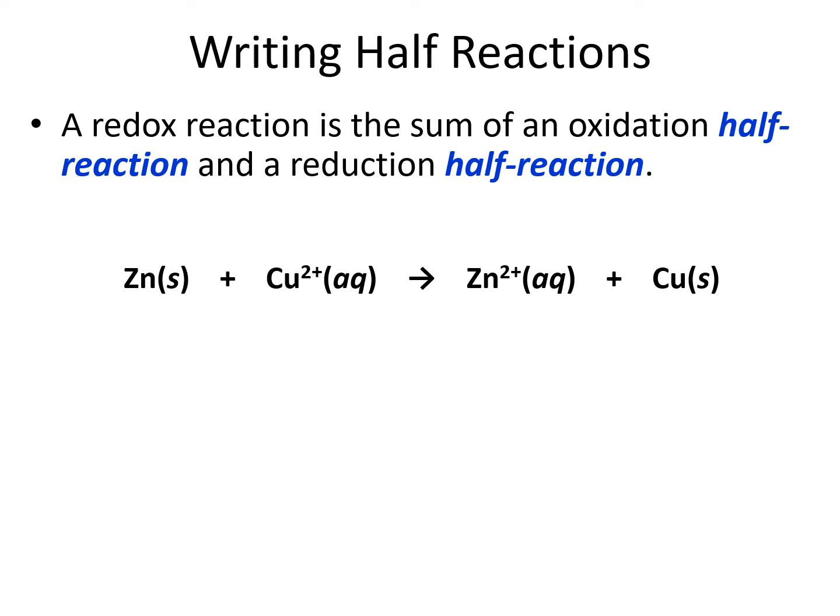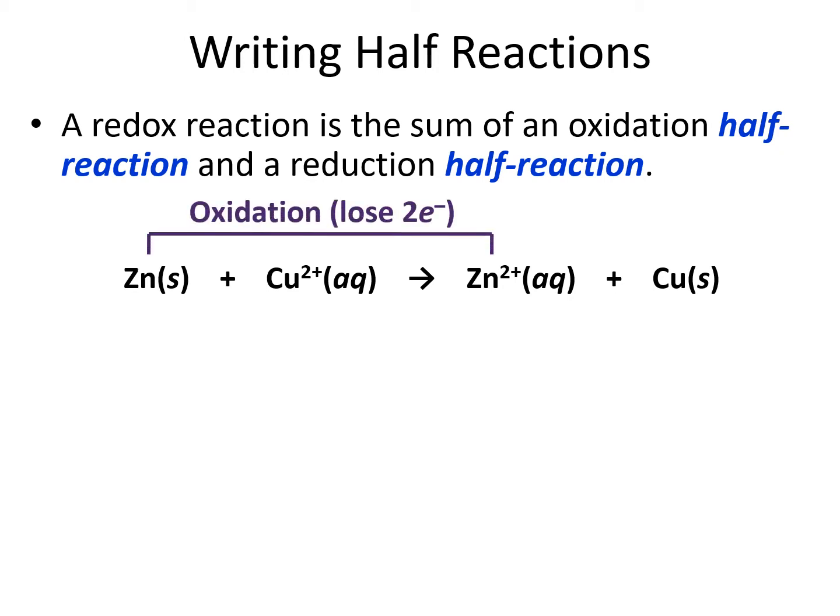In this example, we have zinc solid and copper ion reacting to make zinc ion and copper solid. The zinc is going from zero in its neutral form to plus two, which means it's losing two electrons. In order to get that plus two charge, two negatively charged electrons must be lost. That step is oxidation because loss of electrons is oxidation. You can also look at the oxidation numbers — it's going from zero to plus two, becoming more positive, so it's an oxidation step.